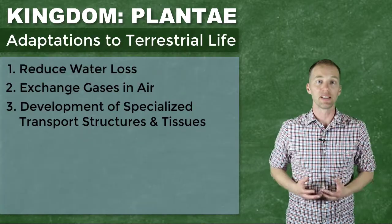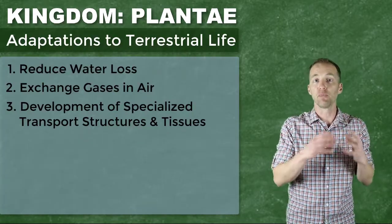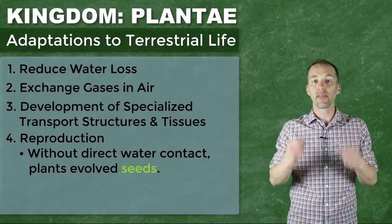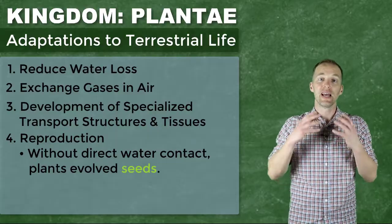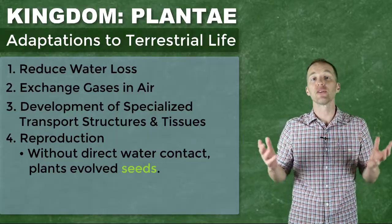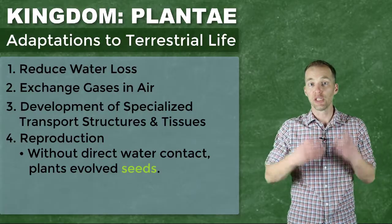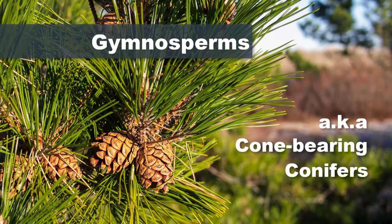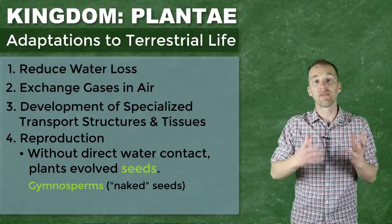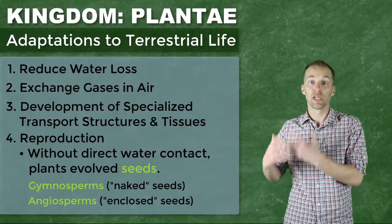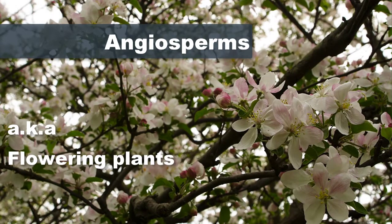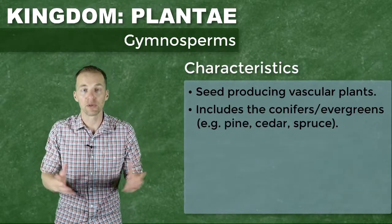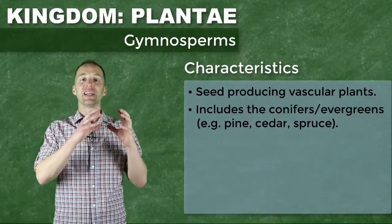As we increase the complexity of these plants, we get into plants that can move further from a source of water — that is, they can reproduce without water being present. We refer to these as the seed-producing plants. We can further subdivide them into gymnosperms, which we most associate with cone-bearing plants — the conifers, the evergreens, the Christmas trees — and the angiosperms, which we associate with flowers. The gymnosperms are characterized as having naked seeds.